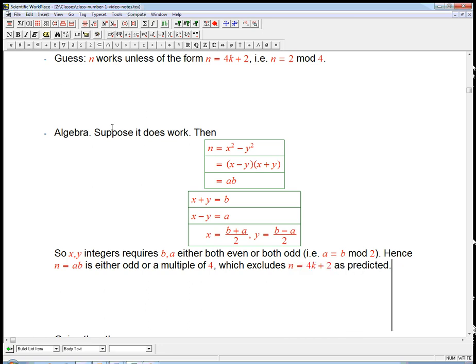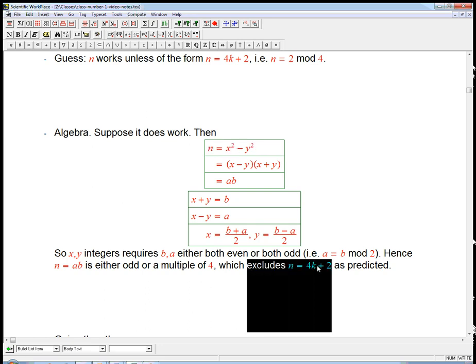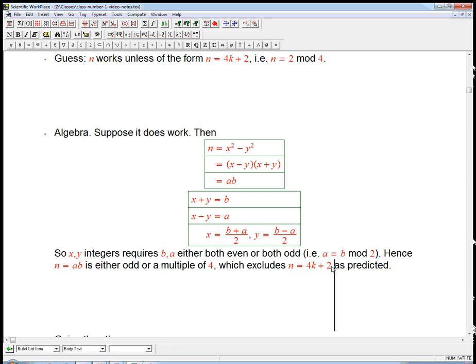This is really half of the story we'd like to show. That we've assumed that n can be written as a difference of two squares. And we've seen now why it has to be not one of these guys that's 2 mod 4.